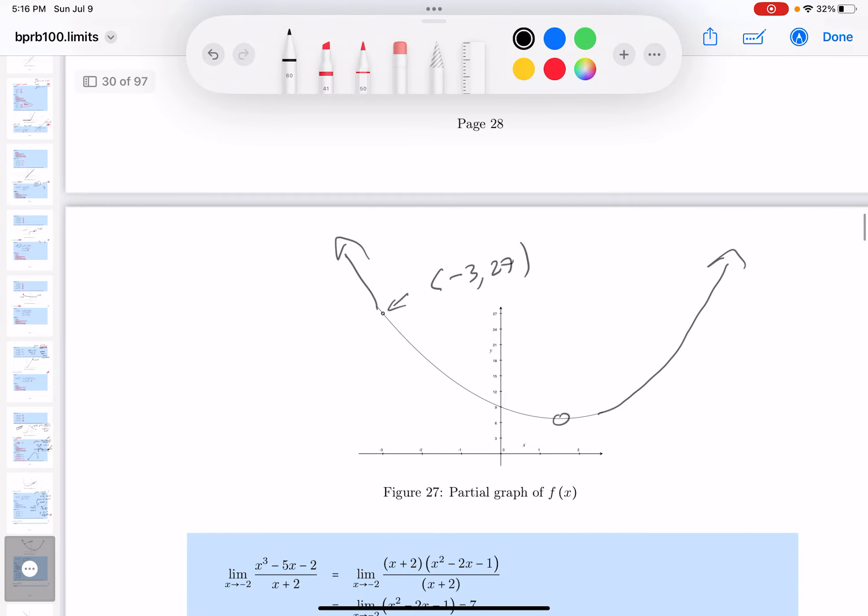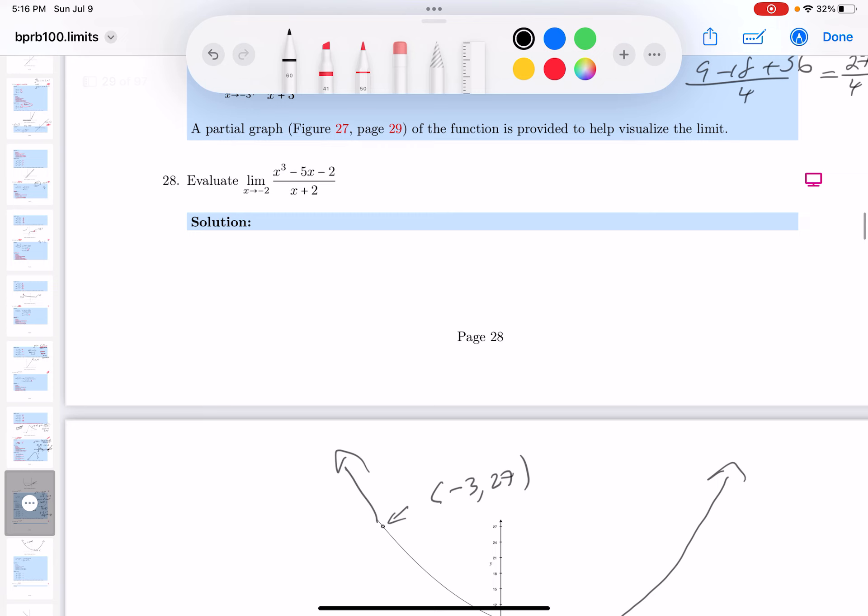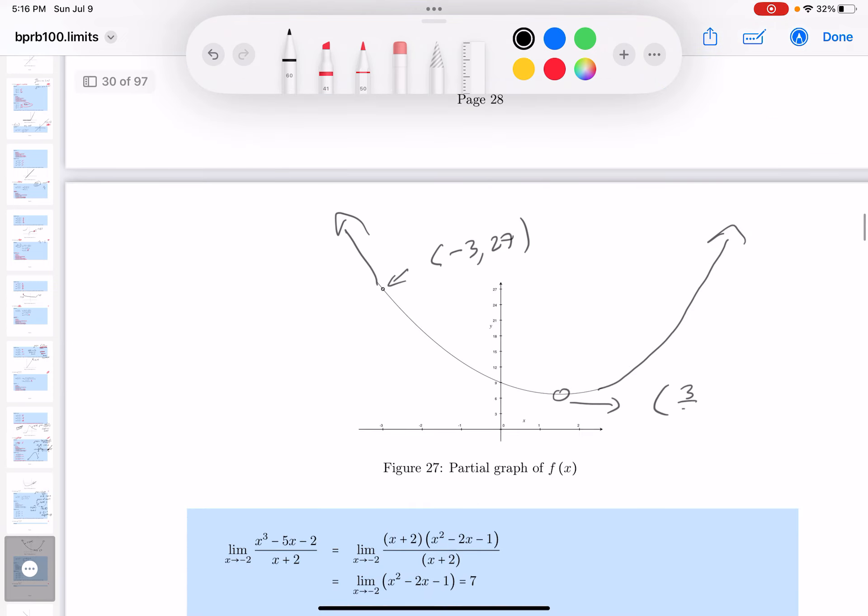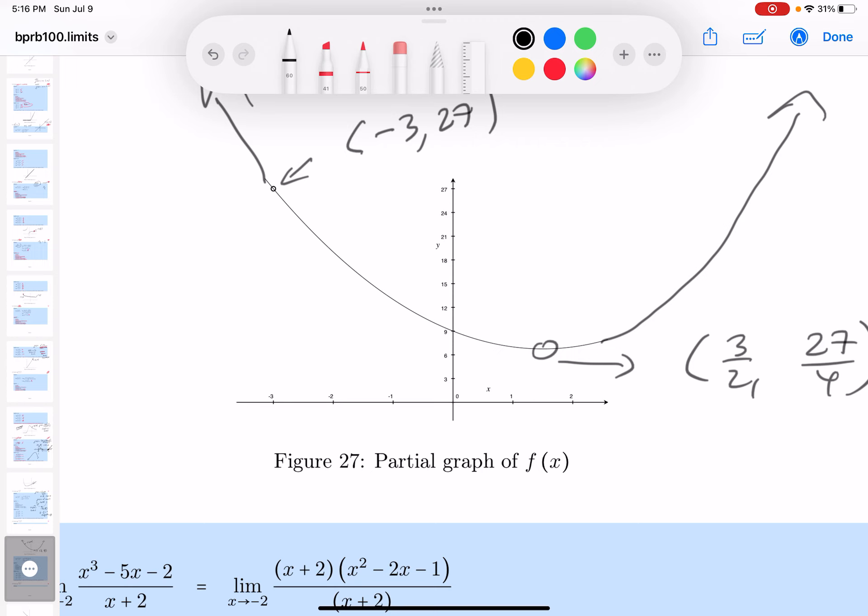I said the vertex, if you recall. Let's go back over here: 3/2 and 27/4. Let me kind of look at that, blow it up. Yeah, 27/4 is going to be, let's see, 6 and 3/4. Okay, looks to me.